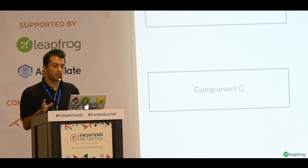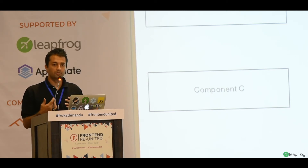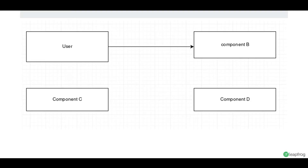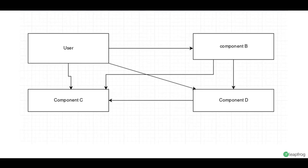Say the scenario is: we have a user, and the user gets updated. Now the user needs to notify another component that it has been updated. It's easier to update one component to another component, but when one component needs to update various components, and those various components need to update yet another component, it starts getting cluttered and becomes hard to follow — passing up and down and back and forth.